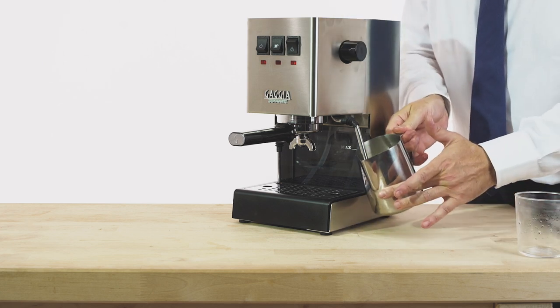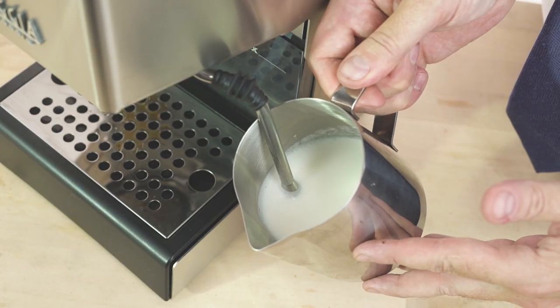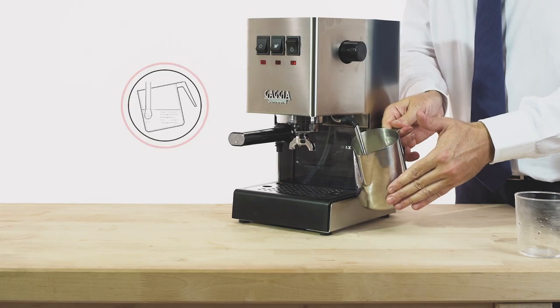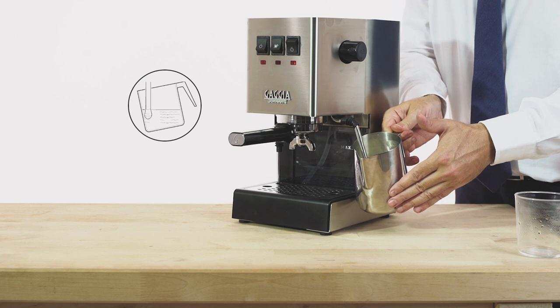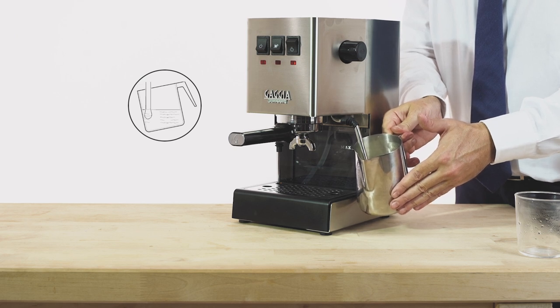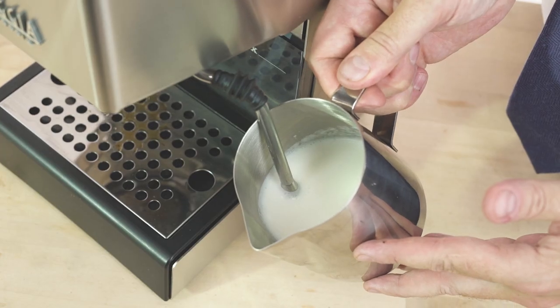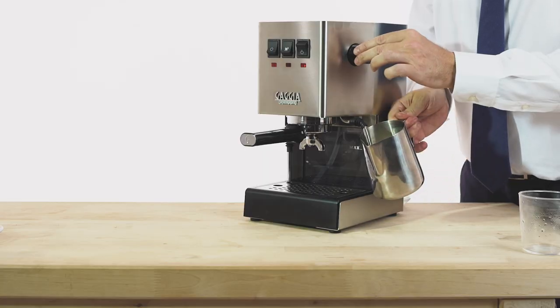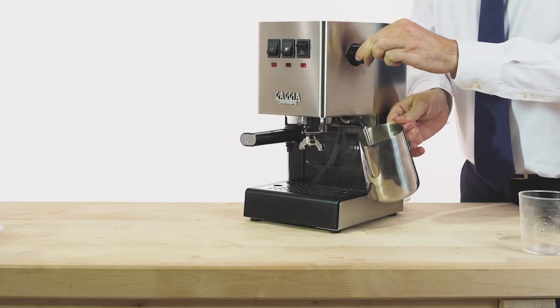Start by putting the steam wand in the jug, half filled with cold milk, so that it is just a few millimeters below the surface and close to the sides, not in the middle, with the right angle to make a consistent swirl. Turn the steam knob at the maximum level.